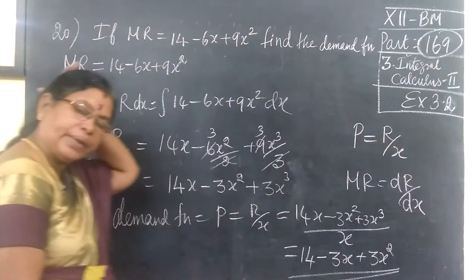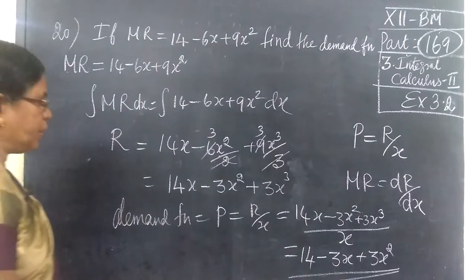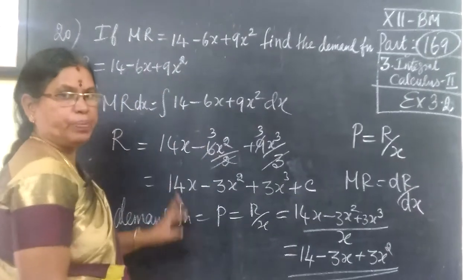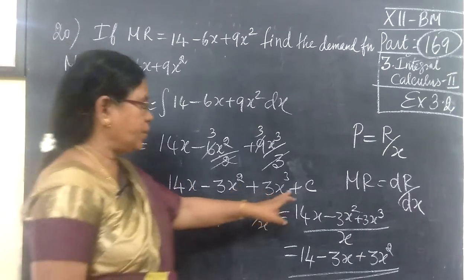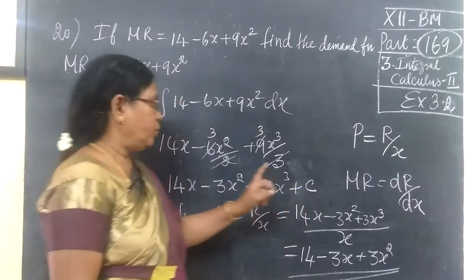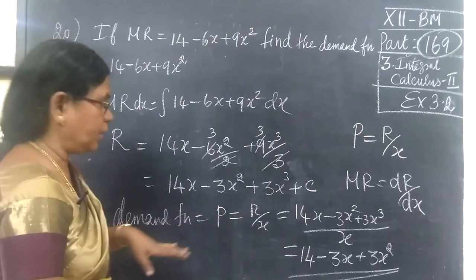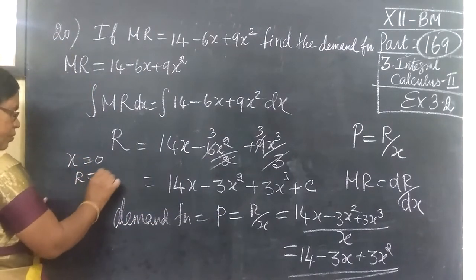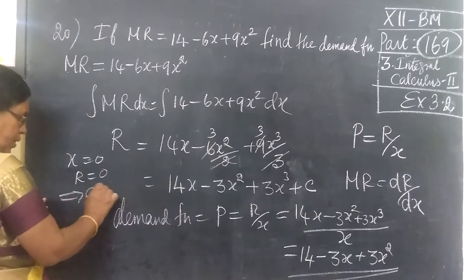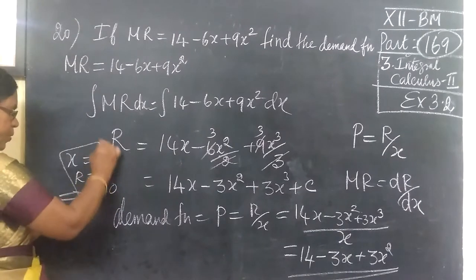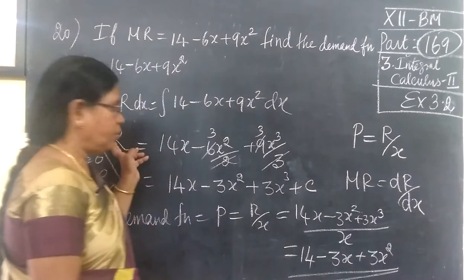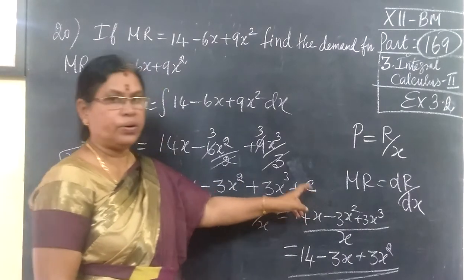Now if you have one mistake, we can do it. The same mistake, the condition is the same. When x equals 0, R equals 0, then C equals 0. Now if we can do it, it is automatically C equals 0.